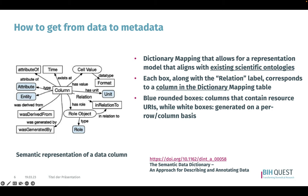Getting from data to metadata involves the process of creating a present representation model that aligns with existing scientific ontologies. One way to achieve this is through dictionary mapping, which involves assigning metadata to data elements based on a predefined set of rules. In this process, a data dictionary mapping diagram is created, with each box corresponding to a column labeled with a relation. The blue rounded boxes contain the resource URIs of the ontologies, while the white boxes are generated on a pair, row, or column basis. The result is a semantic representation of a data column with its relationship to its metadata and suitable ontologies.